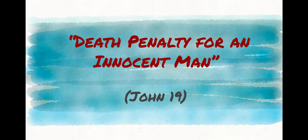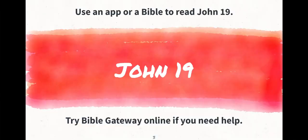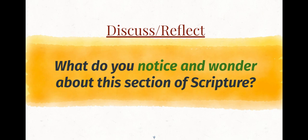This lesson is entitled 'Death Penalty for an Innocent Man.' It is from John 19. I encourage you to get a Bible or an app that allows you to read through John 19 together. It's a lengthy passage of scripture, but I encourage you to take the whole thing together, either individually or as a group in context. Then we'll go into our first questions — what do you notice and wonder about this section of scripture? Go ahead and stop the video and discuss that now.